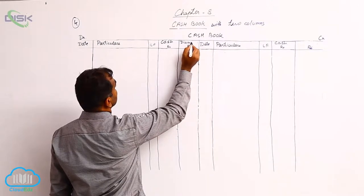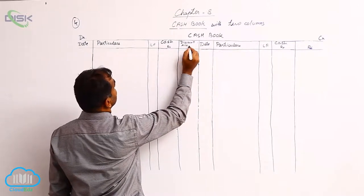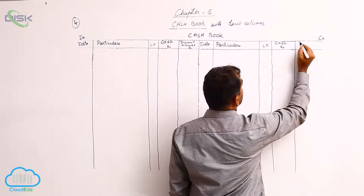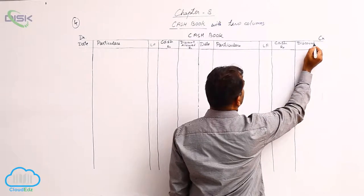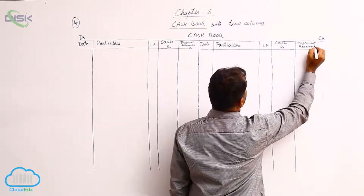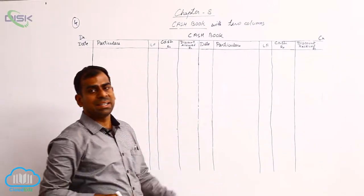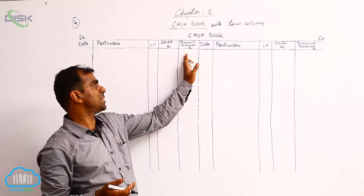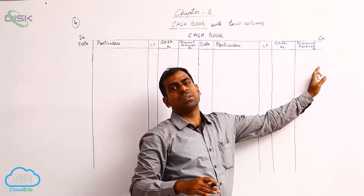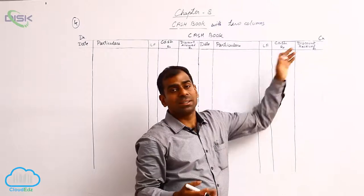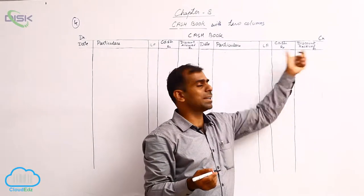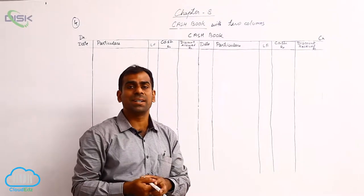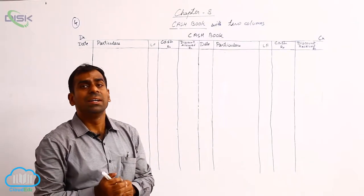On the debit side we have the discount allowed column, and on the credit side we have the discount received column. Discount allowed and discount received are not received or given in cash — they are nominal accounts. Discount allowed indicates the amount you lost and are not going to get, so it is a loss or expense. Discount received means you are not going to pay some amount, so you are gaining. Therefore we credit discount received and debit discount allowed based on the rule of nominal accounts.